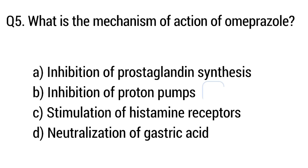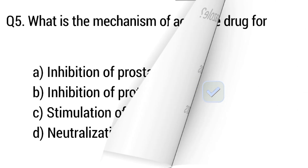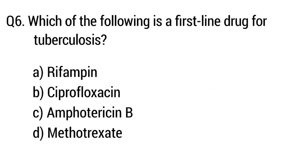Question number 6. Which of the following is a first-line drug for tuberculosis? The right answer is option A: Rifampicin.